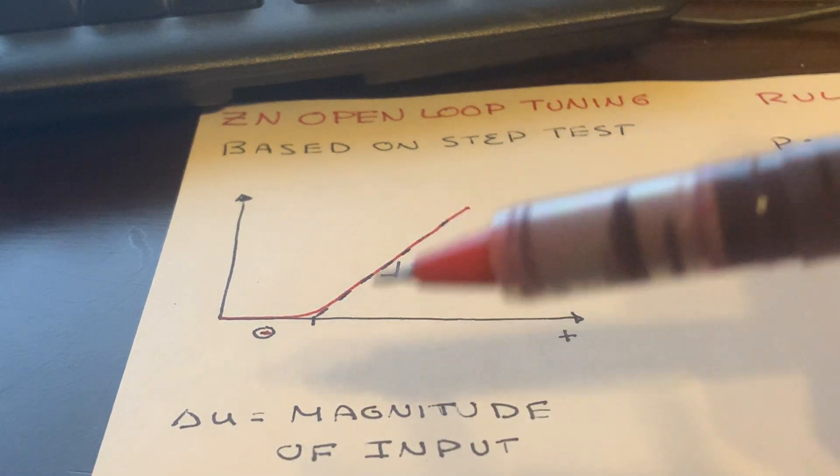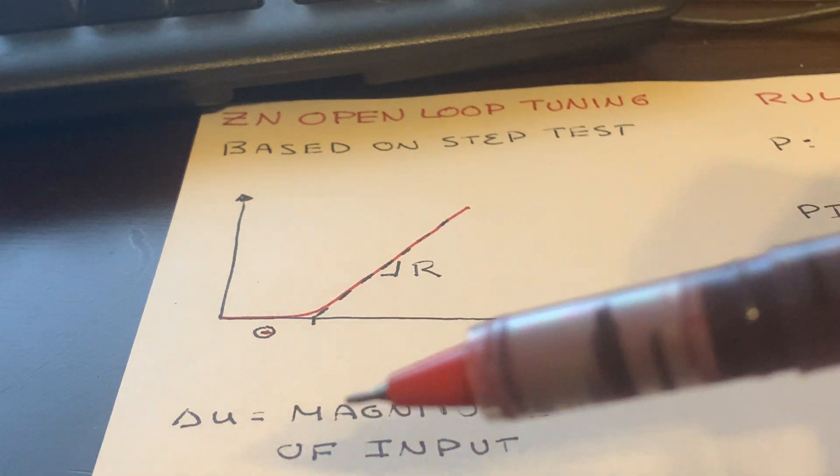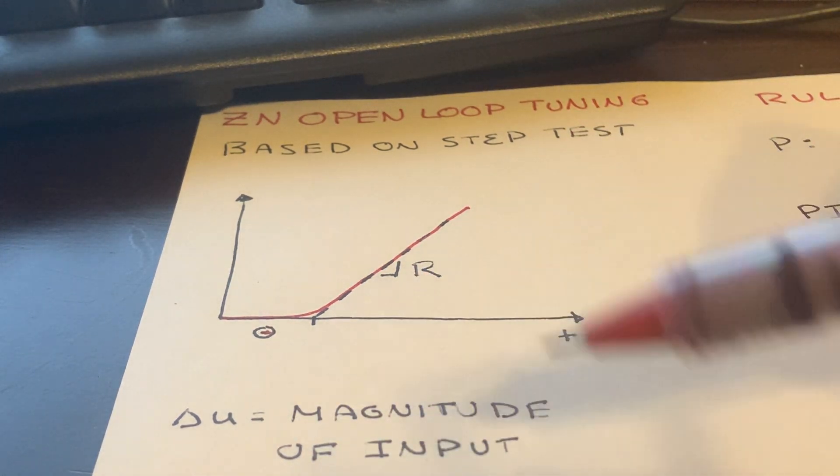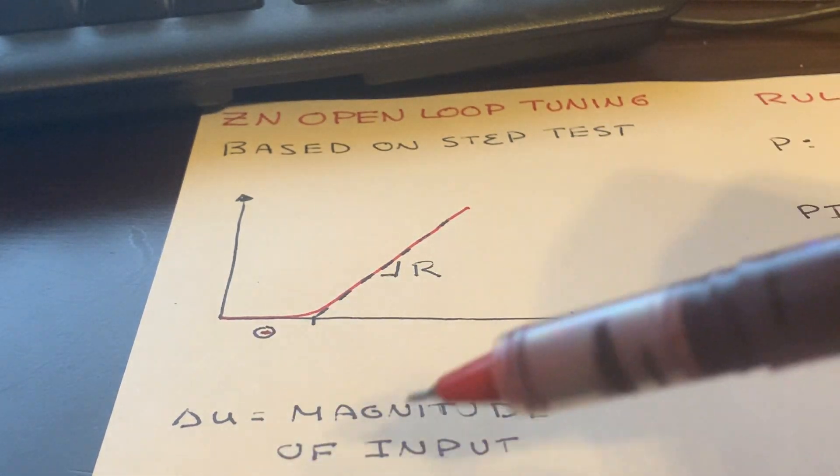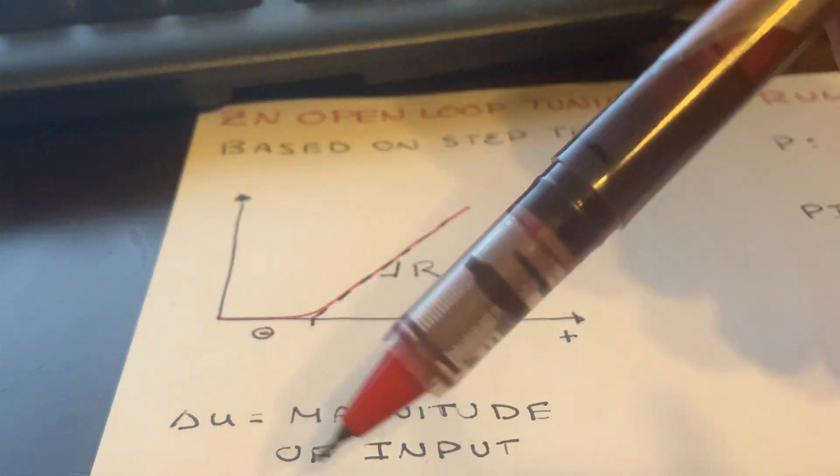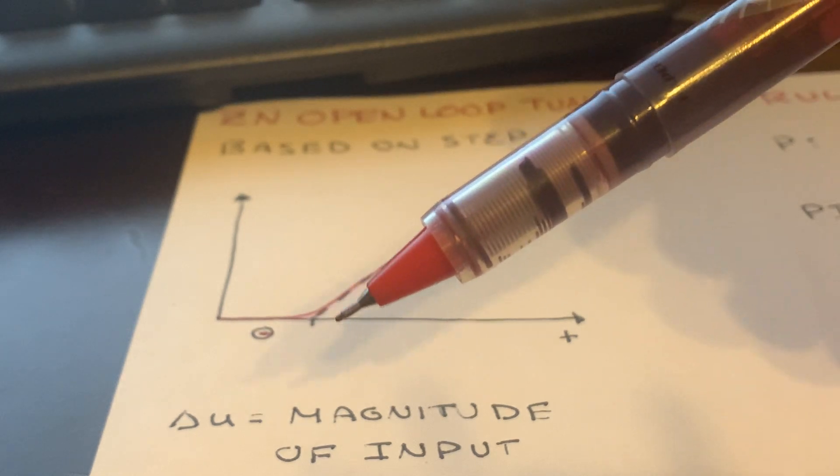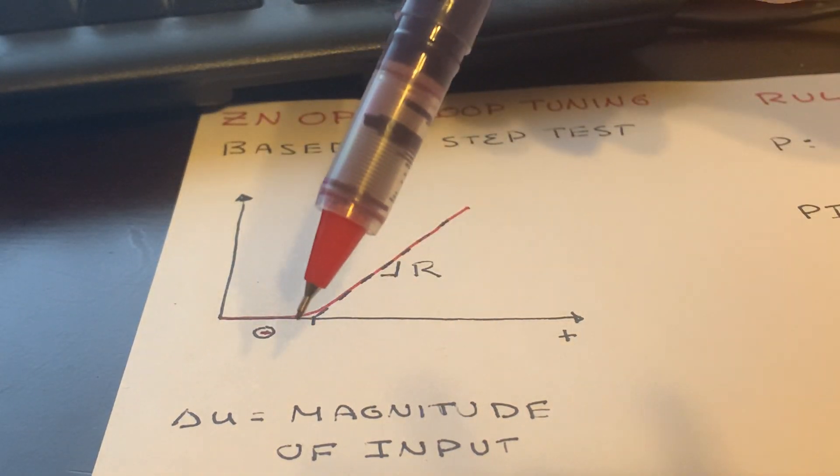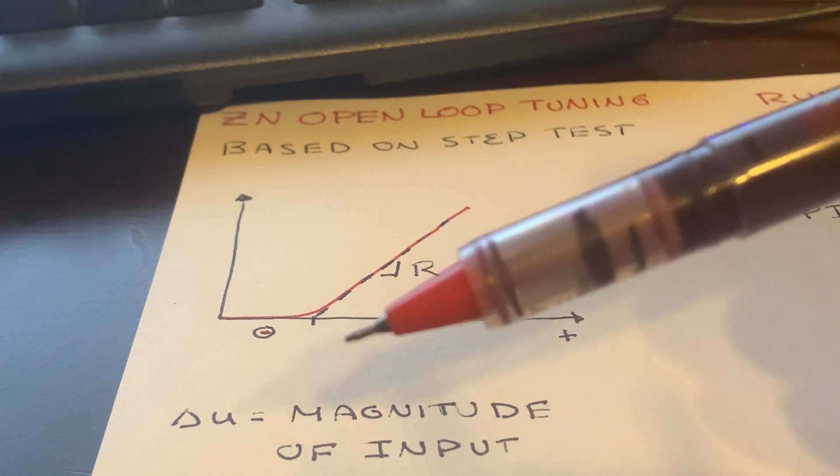Our input might change 10%, in which case it would be 0.1, or it might go by a factor of 2. It's just basically the magnitude of that change. We put that as a correction for the slope, because the slope's going to vary based on the magnitude. As the magnitude of the input increases, that slope's going to increase. And as we decrease it, that slope's going to decrease.